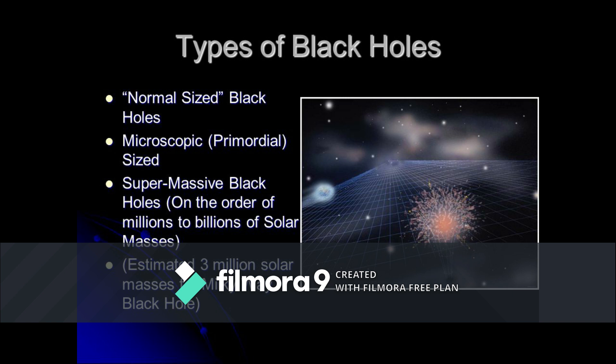The smallest type is known as the primordial black hole. Scientists believe that primordial black holes are as small as a single atom but with the mass of a large mountain.